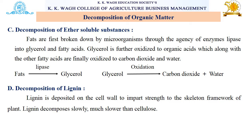The third step under decomposition of organic matter is the decomposition of ether-soluble substances. Fat acts as an ether-soluble substance. Fats are first broken down by microorganisms through enzymes like lipase into glycerol and fatty acids. The glycerol is further oxidized to organic acids, which along with other fatty acids are finally oxidized to carbon dioxide and water.